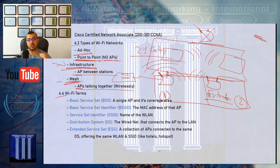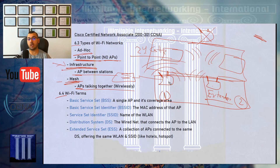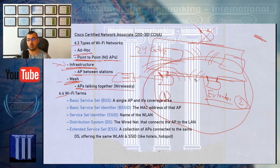This is just like the extenders available in the market that you buy, plug into an electricity socket in the wall, and connect wirelessly to your home router to cover a bigger coverage area. Most of you have probably already done this at home for the need of extending coverage. Those are the three types.